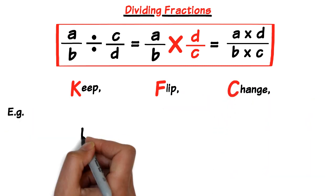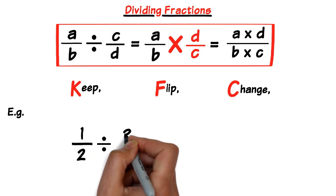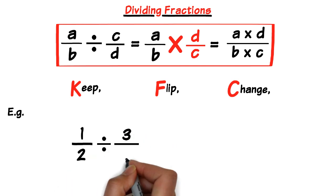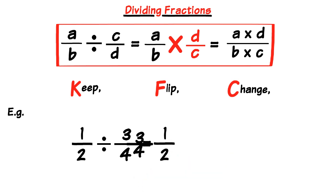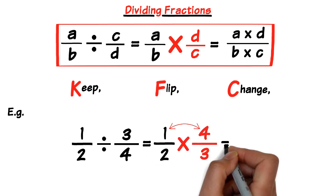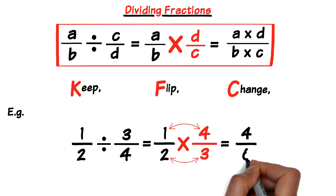For instance, take 1 over 2 divided by 3 over 4. We keep the first fraction the same, flip the second fraction so 3 over 4 becomes 4 over 3, and change the divide sign to multiply. So it's 1 over 2 times 4 over 3. Multiplying numerators: 1 times 4 equals 4; denominators: 2 times 3 equals 6. The new fraction is 4 over 6.